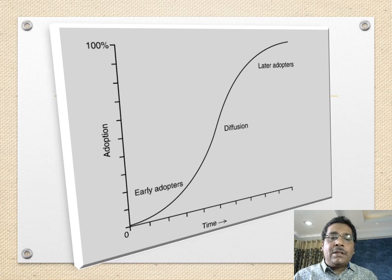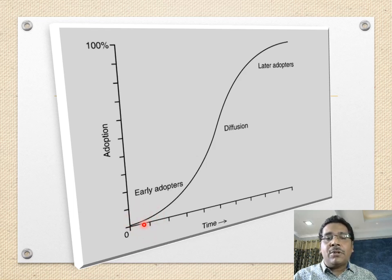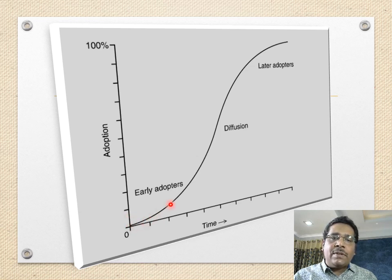This is the popular S-curve diagram showing how diffusion of innovation works over time. A small number of early adopters are always willing to try out new things — those are the innovators — followed by early adopters, and then later adopters, until the innovation reaches total diffusion. The cumulative number of adopters is on the Y-axis, and time is on the X-axis.